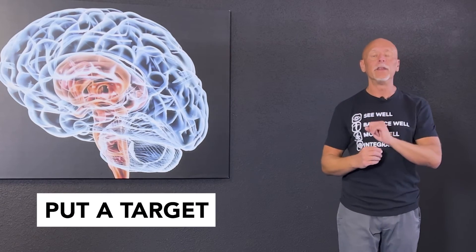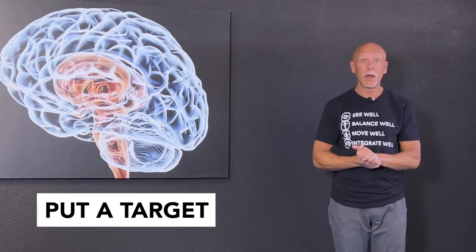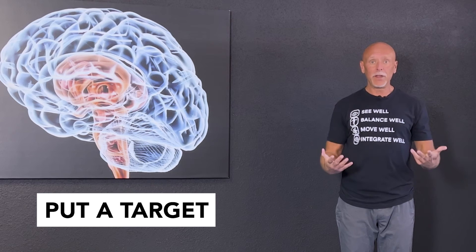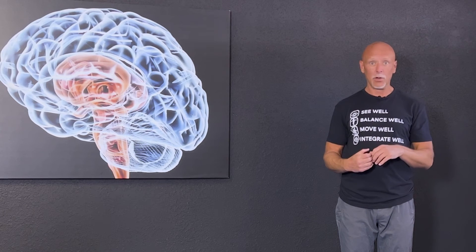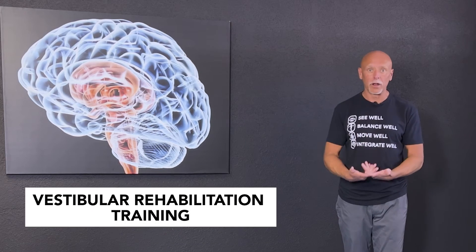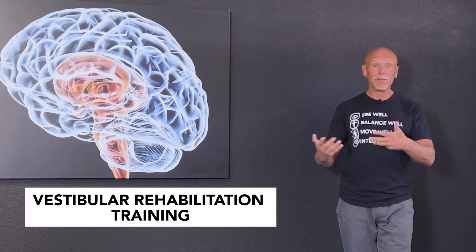Once you're feeling okay with that, the next thing we want to add in is some head movement. The way we're going to focus on this in the beginning is you're going to put a target in front of you, like I have the camera right now. Once you have that target, you're going to begin doing a small right and left head rotation while keeping your eyes on the target. This is the beginning process of what we call VOR rehabilitation or vestibulo-ocular training, vestibulo-ocular reflex training.